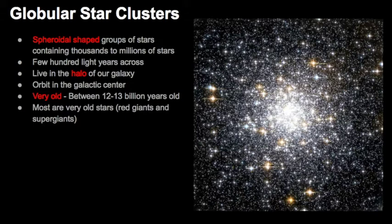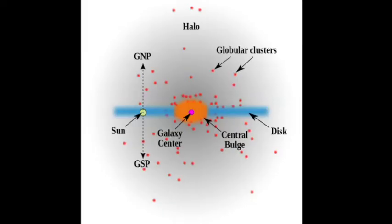The stars located within globular clusters are known as first-generation stars, so they have been around for a very long time. Typically you see red giant stars and supergiant stars within them. Since they're very old, they take a long time to form, and sometimes a few of them have formed within the cores of smaller galaxies that have been cannibalized by the Milky Way.